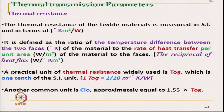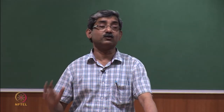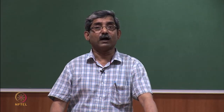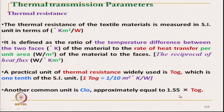In SI units or tog, we normally measure thermal resistance of a fabric in flat sheet form. But when talking about the overall clothing — the thermal insulation of a complete clothing ensemble — we use the term clo. There is an approximate relationship: 1.55 tog equals one clo. We will try to derive this relationship.